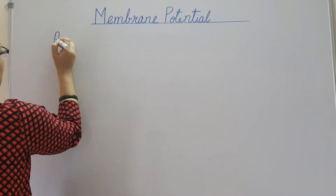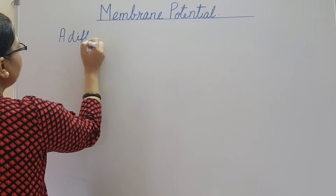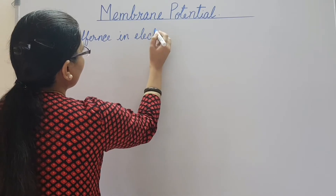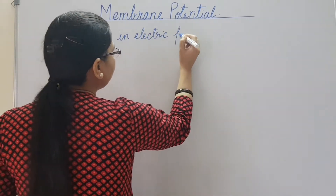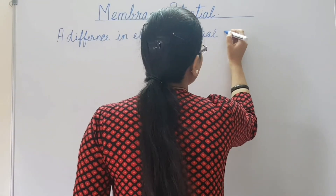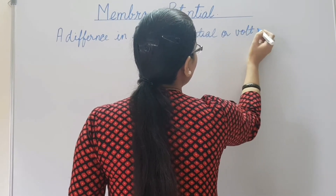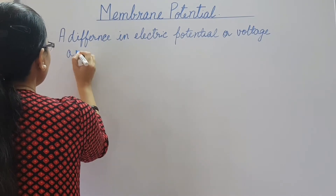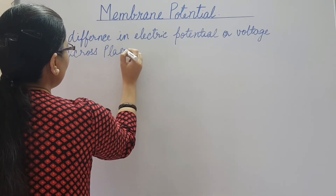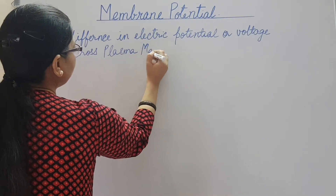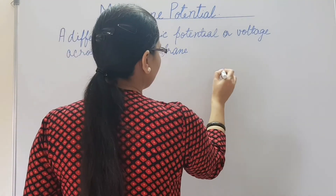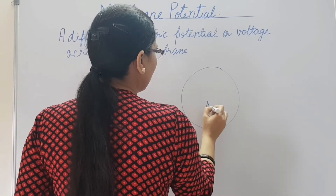What is membrane potential? It is a difference in electric potential or voltage across the plasma membrane. This is the cell and this is the nucleus.